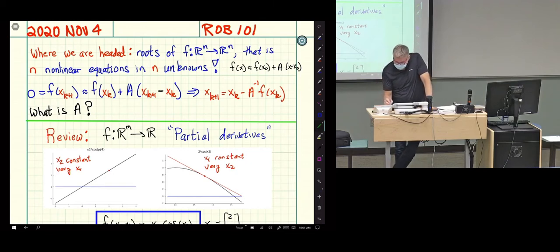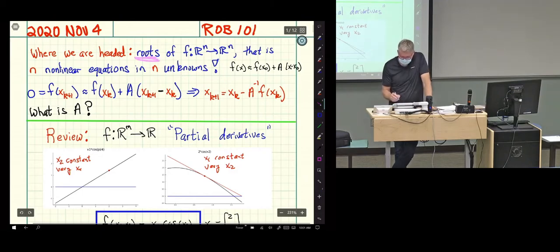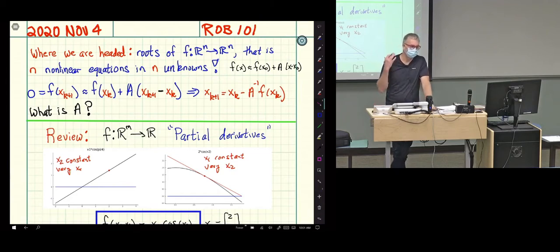And so what we're really after is finding solutions to f of x equals 0, so roots or points where the function vanishes. It's a function that depends upon n variables, and there are a total of n equations. We have n nonlinear equations and n unknowns, and that's a pretty audacious task to try to find solutions.